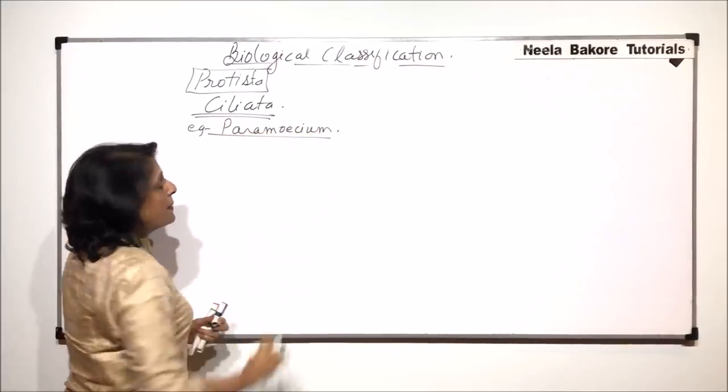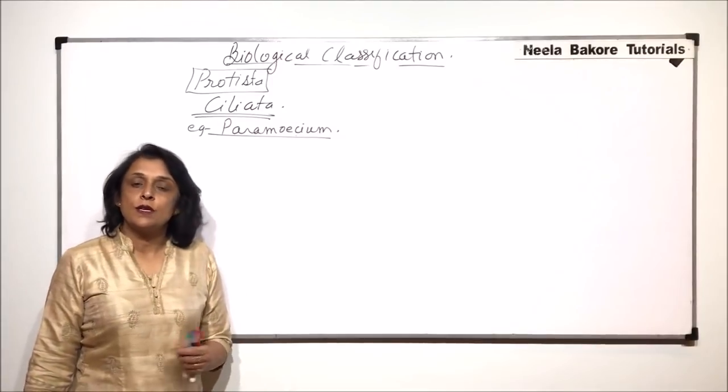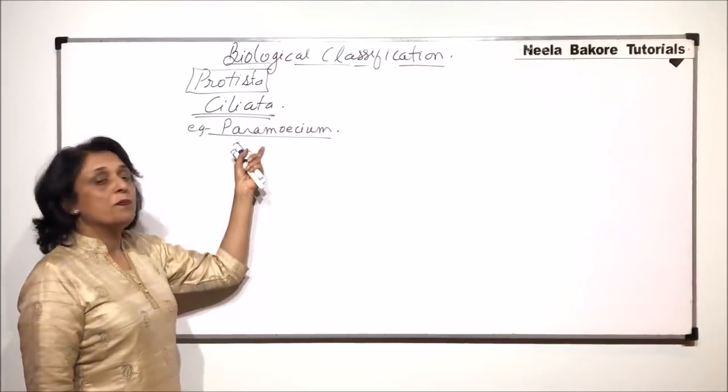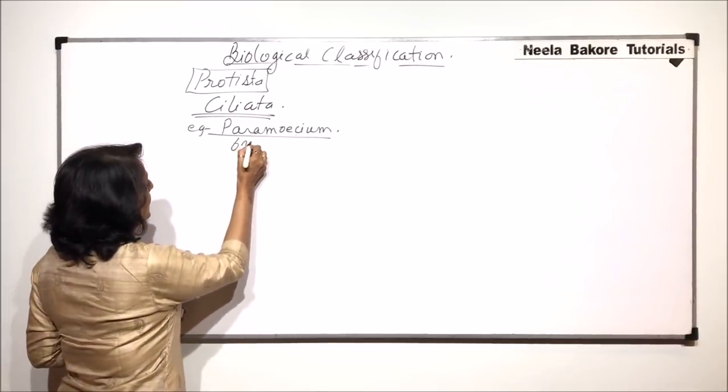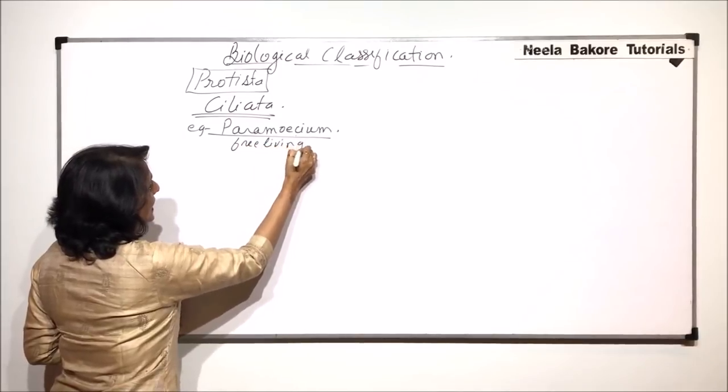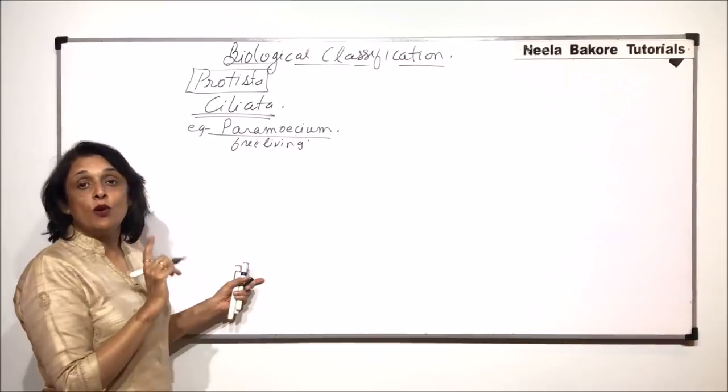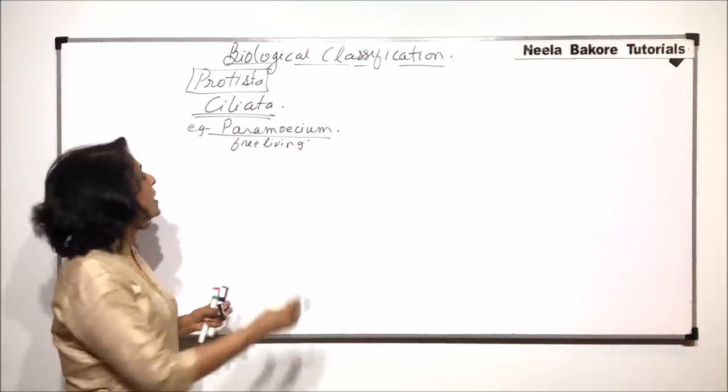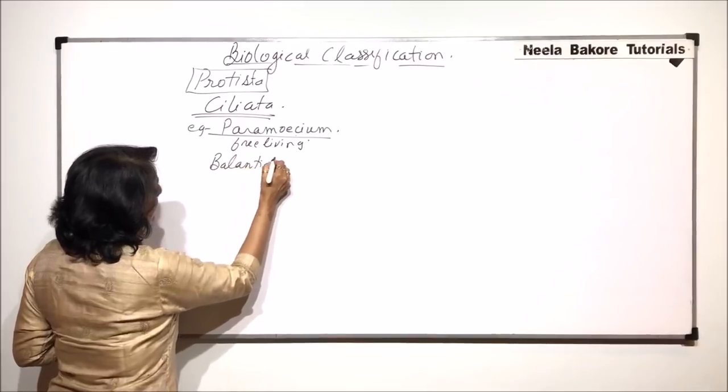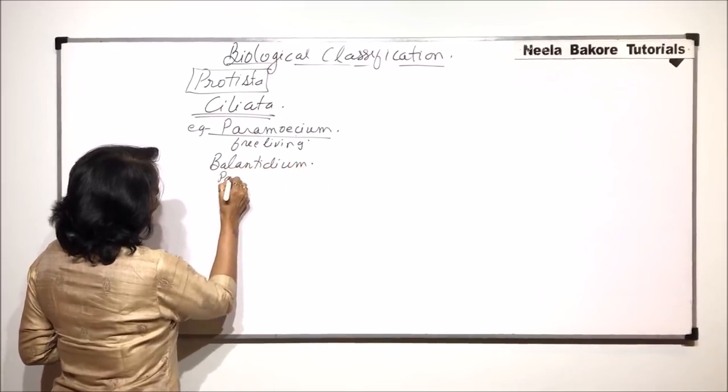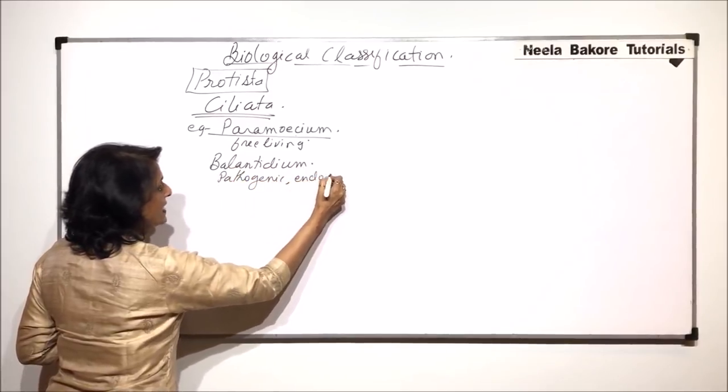Now paramecium is spelled in two ways: one is O-E-C-I-U-M, or sometimes it is also written as E-C-I-U-M. Paramecium is a free-living organism normally found in freshwater. But there is one more example which is parasitic and pathogenic, and that is balantidium. Balantidium is a pathogenic endoparasite.